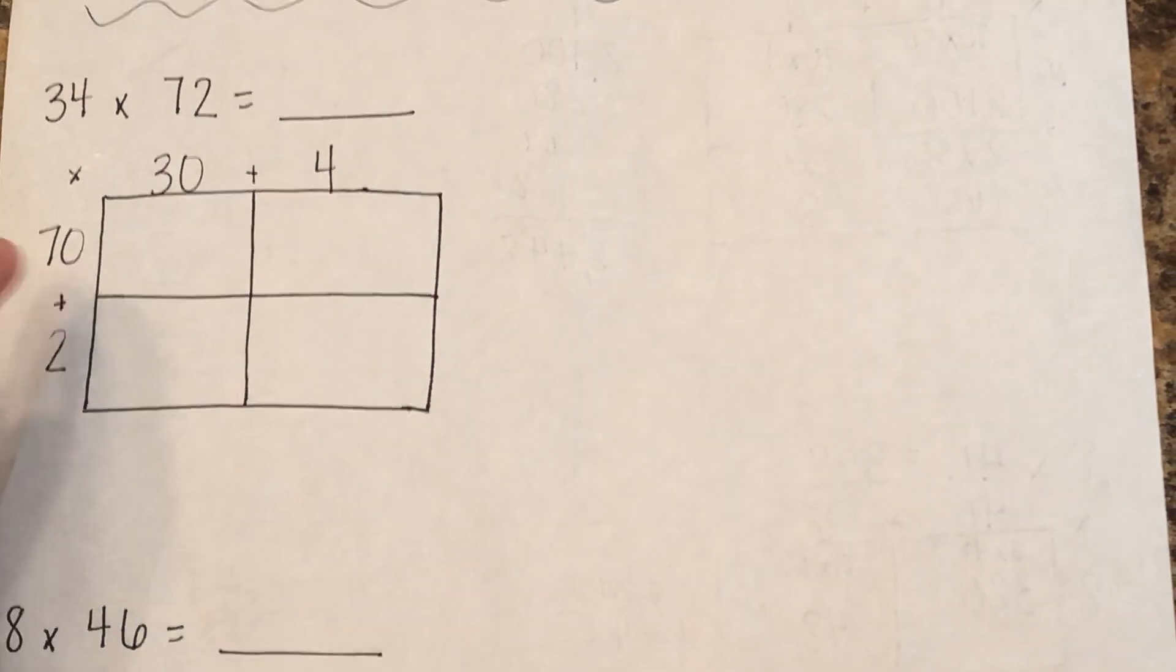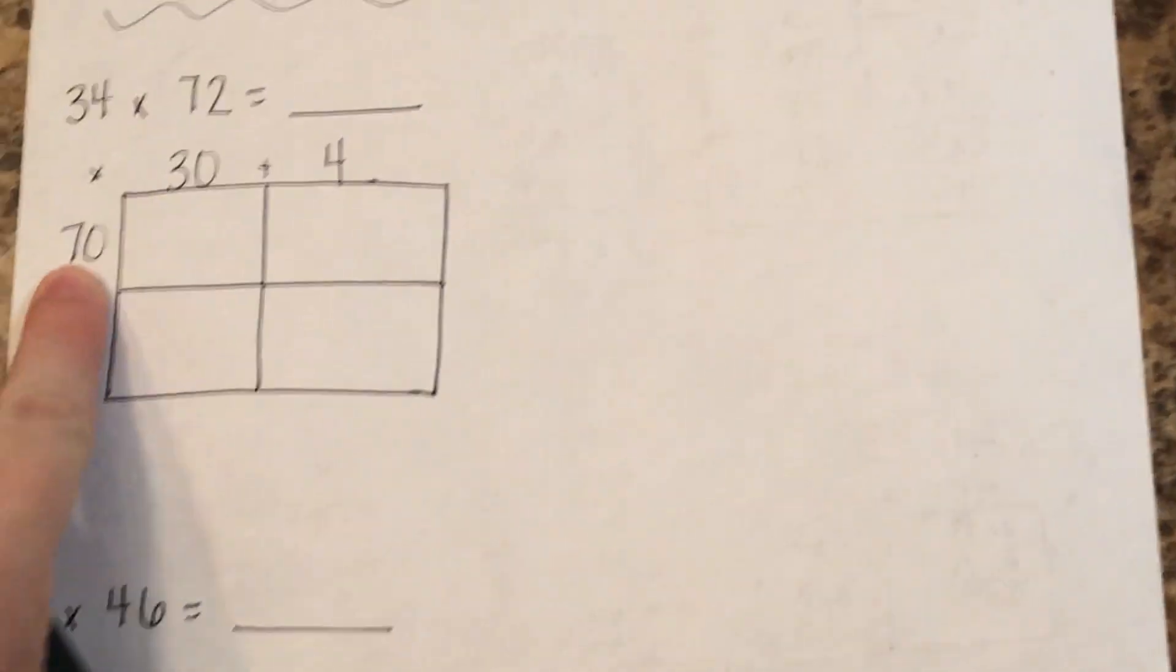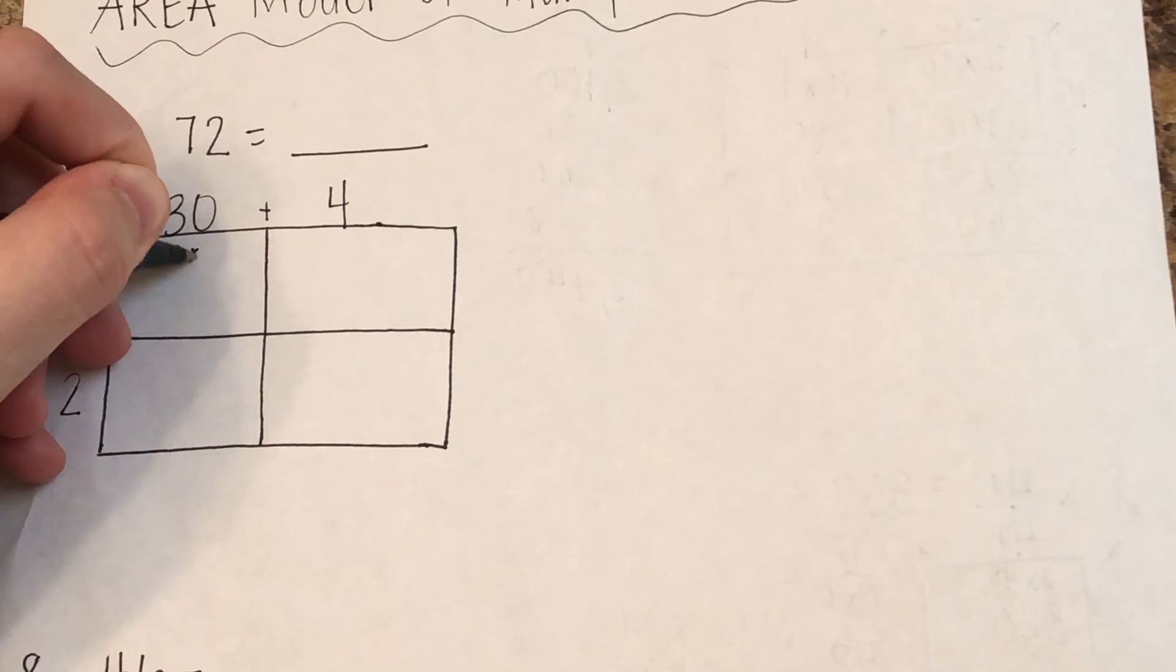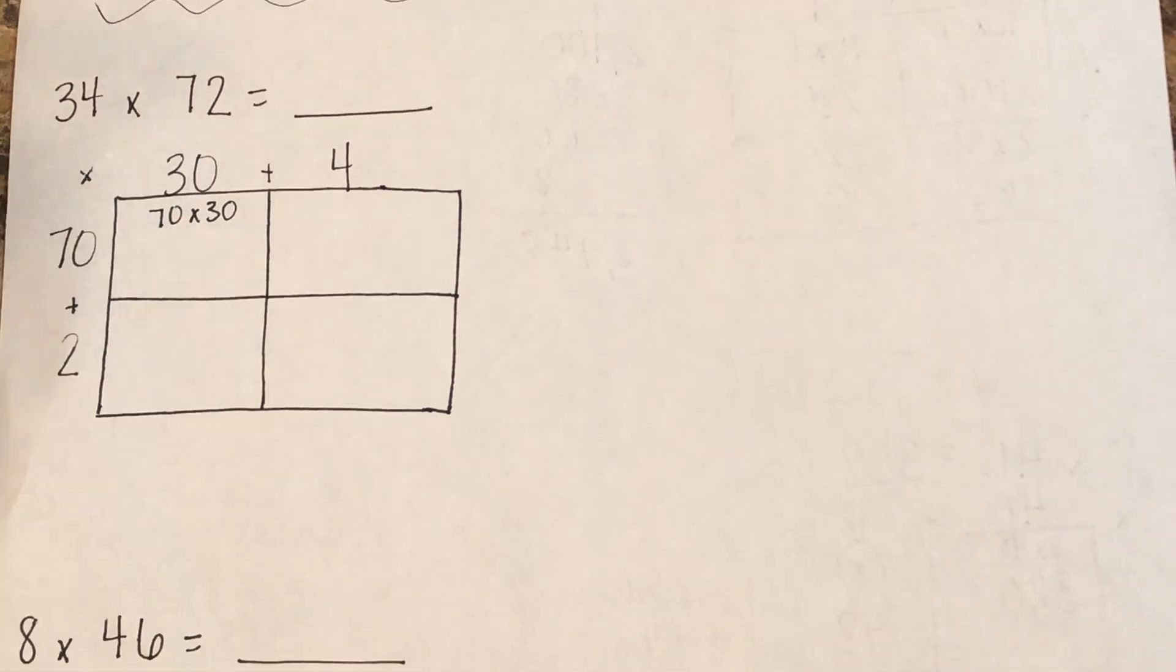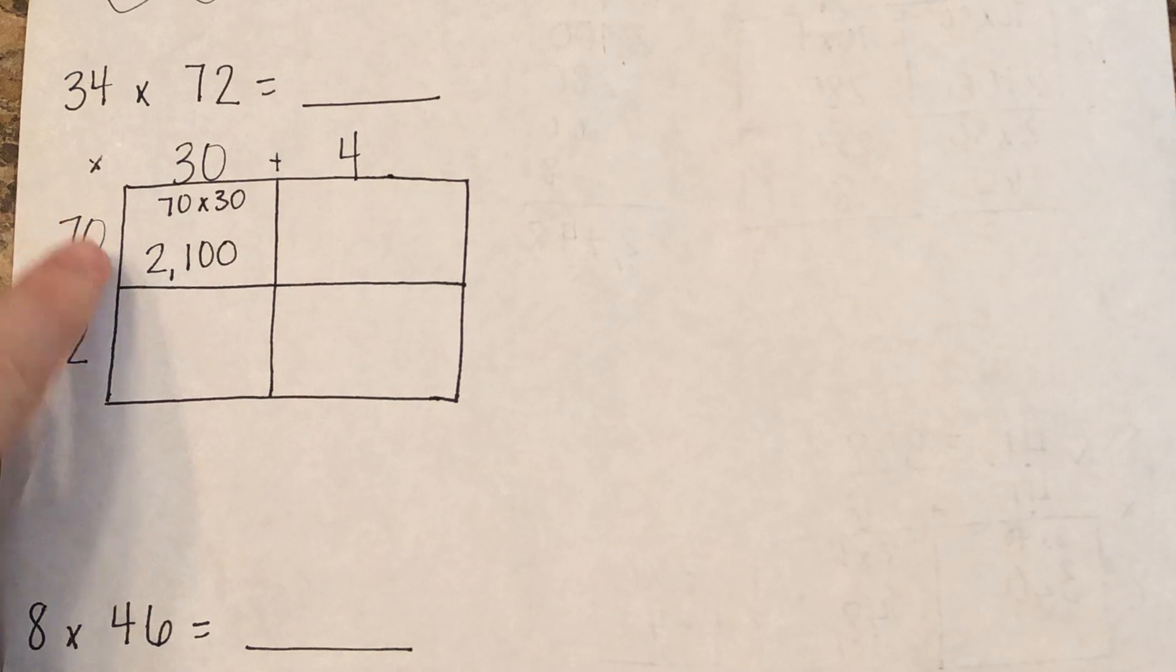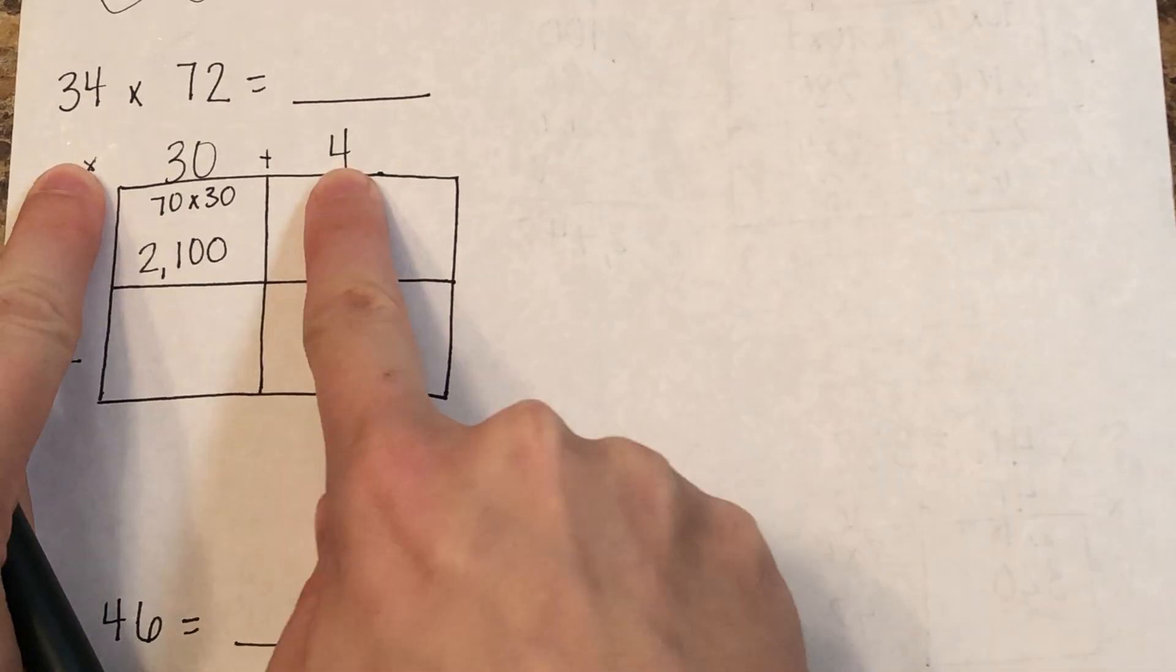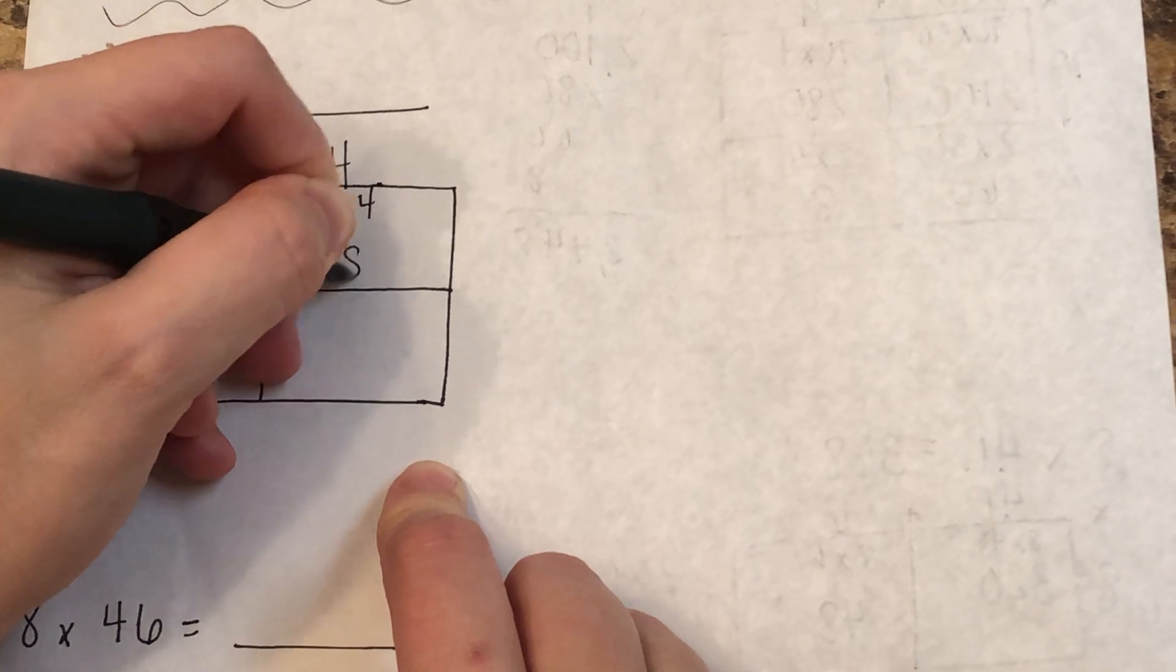Now, in each box, we are going to be multiplying the numbers that correspond with the box. So here, we have 70 times 30 in this box. I like to write it in the box, so that way I know what problem I'm doing in each one. So 70 times 30 is 2,100. Then I'm going to go over here, 70 times 4. 70 times 4 is 280.